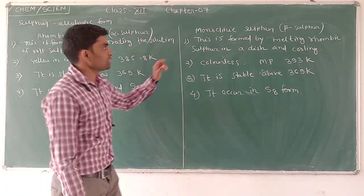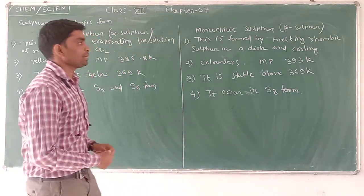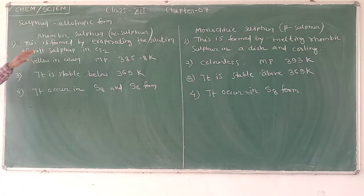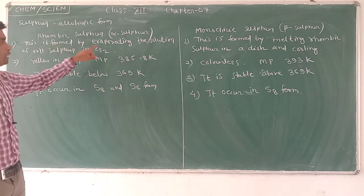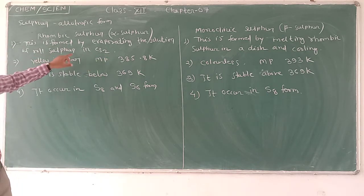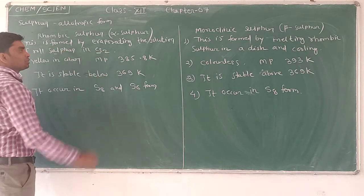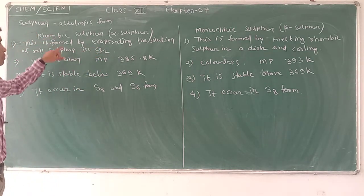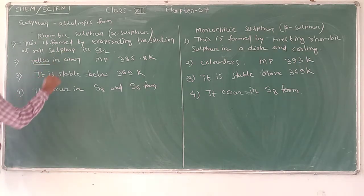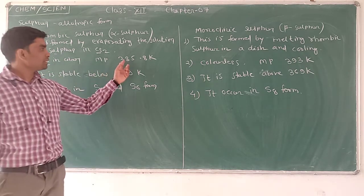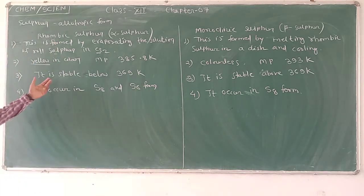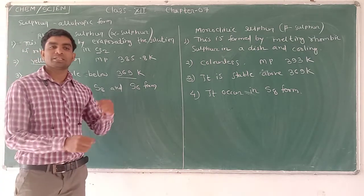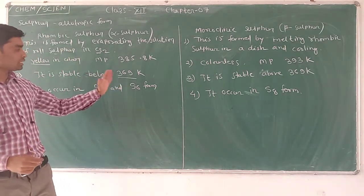One is called Rhombic Sulphur, also known as Alpha Sulphur, and second one is Monoclinic Sulphur, known as Beta Sulphur. Rhombic Sulphur is prepared by evaporating solution of roll sulphur in CS2. It is yellow in color with melting point 385.8 Kelvin. It is stable below 369 Kelvin.